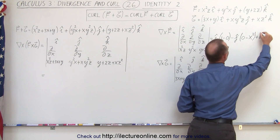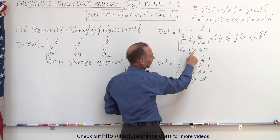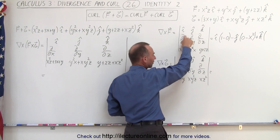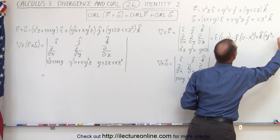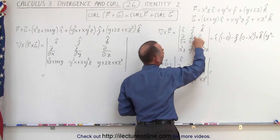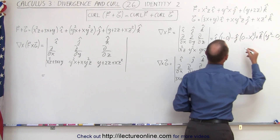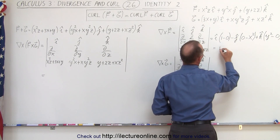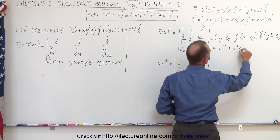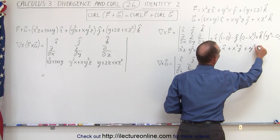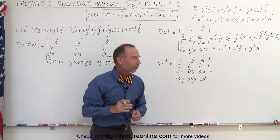And then plus the k component: we take the partial derivative with respect to x of this component, which is y squared, minus the partial derivative with respect to y of this component, which is 0. If we simplify that, we get 1 in the i direction, the minuses cancel out so plus x squared in the j direction, and plus y squared in the k direction.